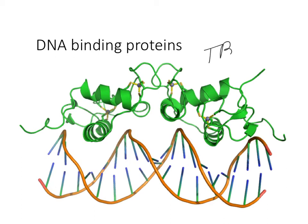This is the TATA binding protein, a eukaryotic transcription factor that binds to the DNA sequence TATA. That's why it's the TATA binding protein — it binds and recognizes the DNA sequence TATA, and it's one of those transcription factors that brings RNA polymerase to the transcription start site on a DNA molecule.